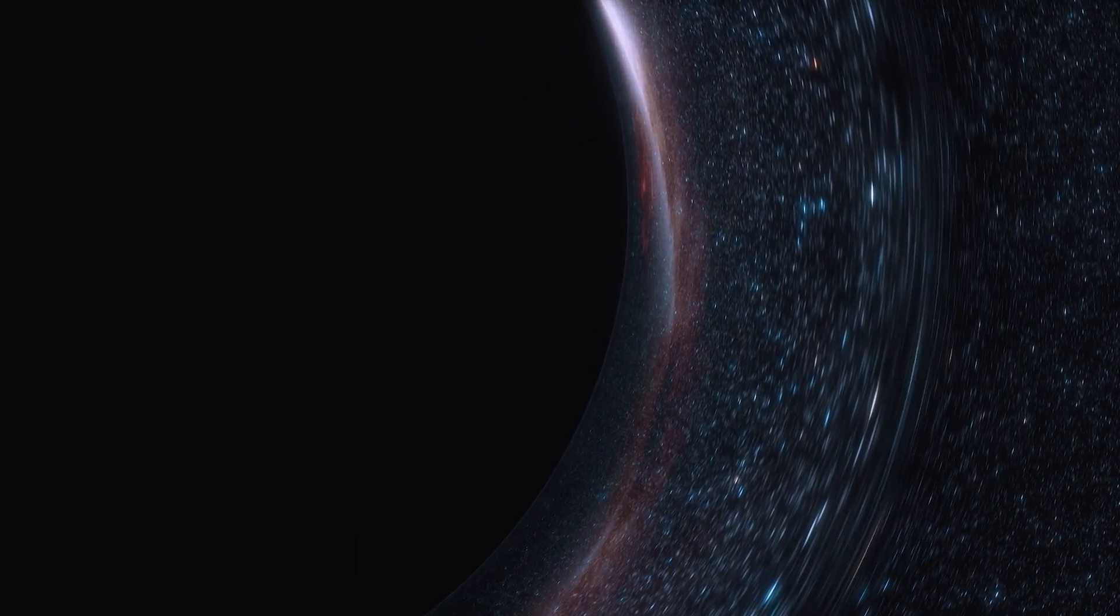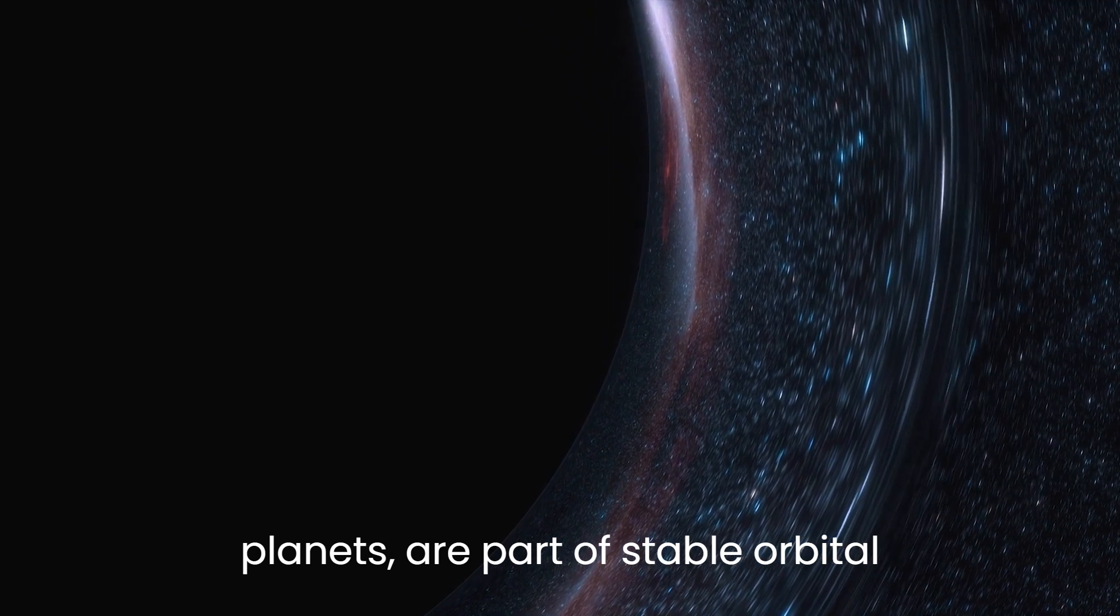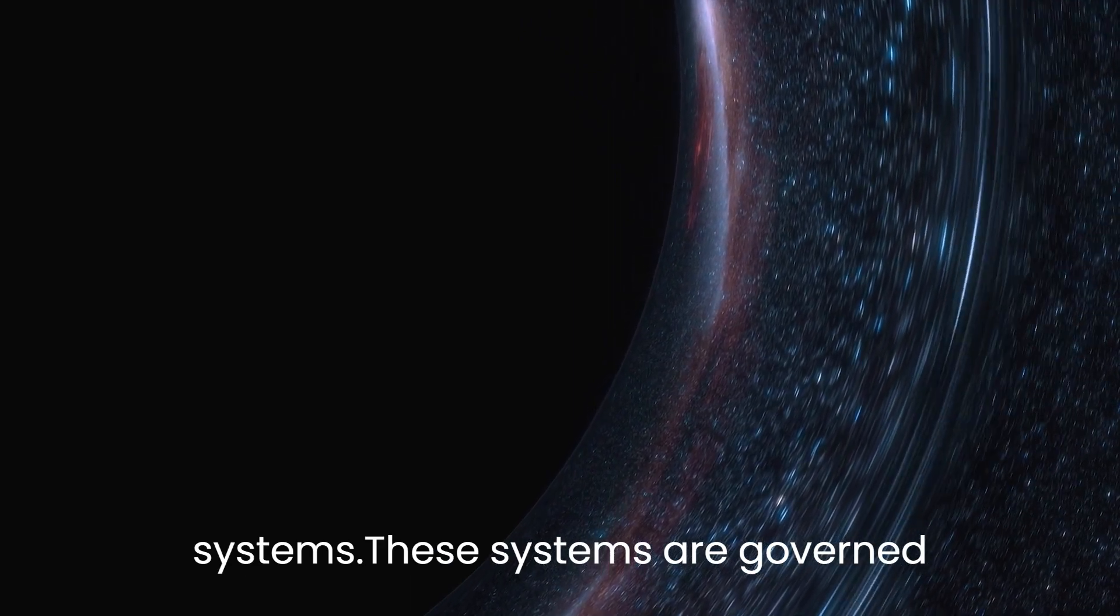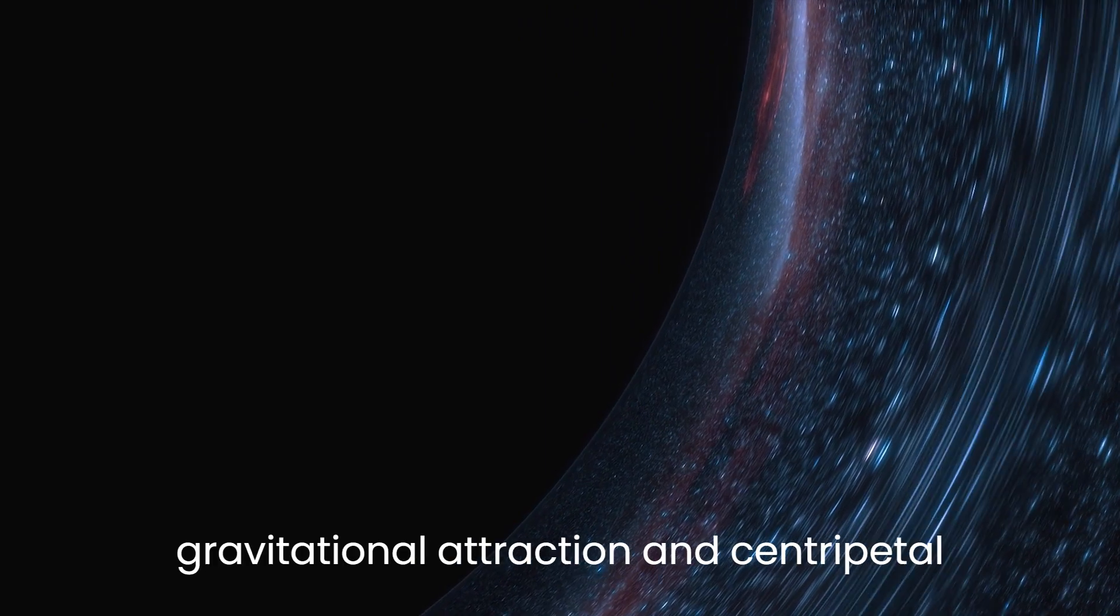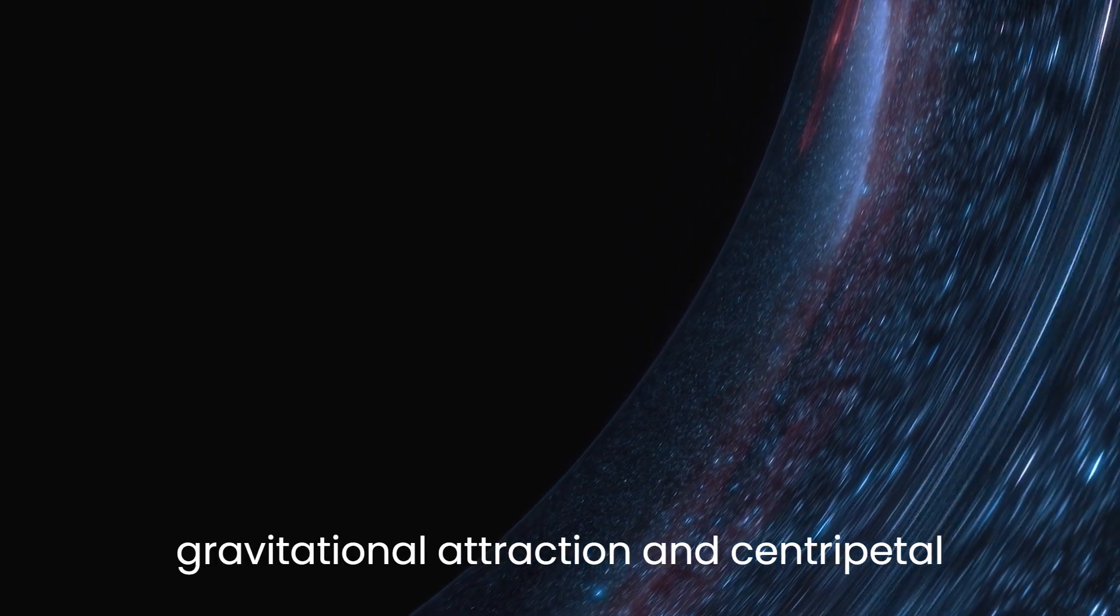In many cases, objects in space, such as stars or planets, are part of stable orbital systems. These systems are governed by the delicate balance between gravitational attraction and centripetal force.